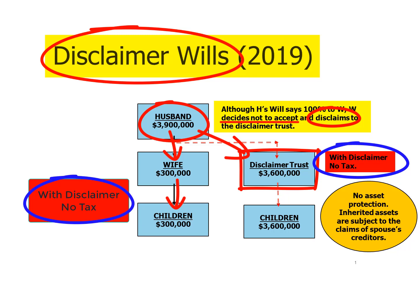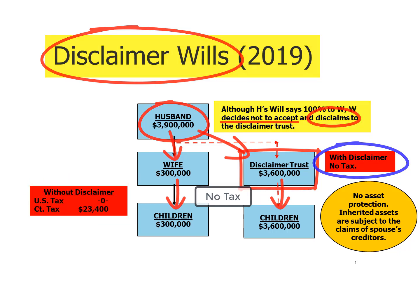It's a type of trust that, even though the wife is the beneficiary, will not be included in her estate when she passes away. So that amount also passes to the children tax-free. As a result, the children end up with a total of $3.9 million without any reduction for taxes.